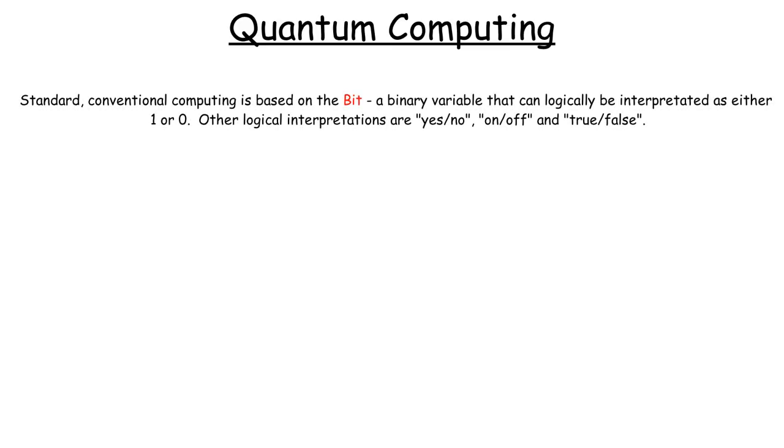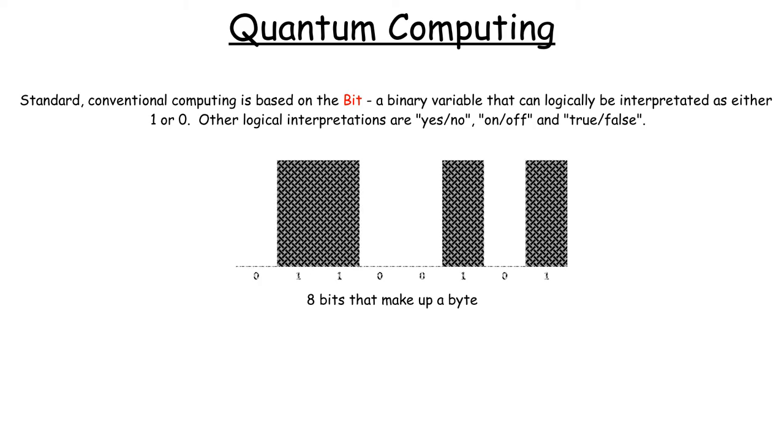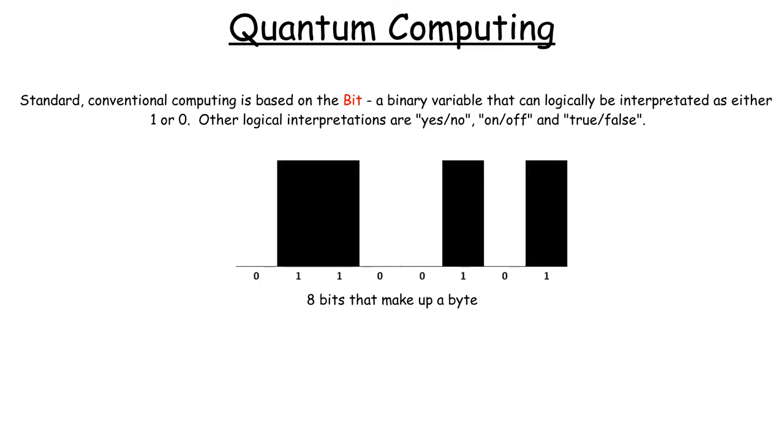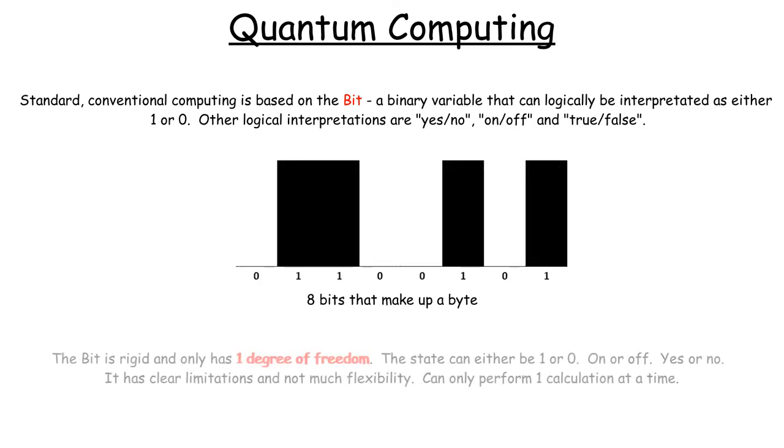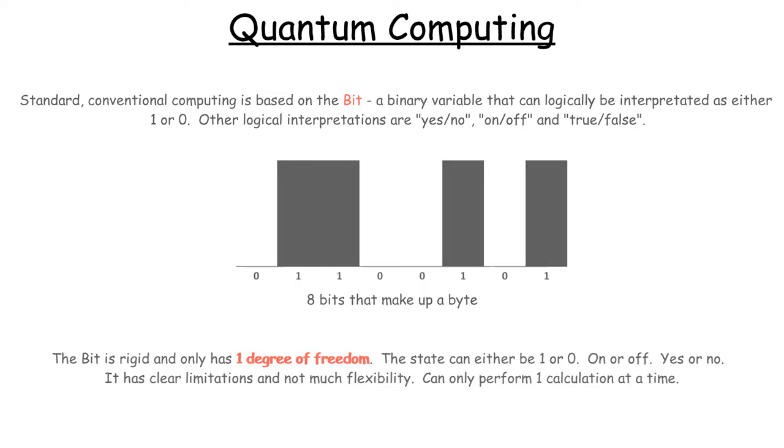So let's first of all talk about our conventional way of computing, which is based on the bits, a binary variable that can be interpreted as one or zero. Up, down, yes, no, on, off. Eight bits make up a byte, and the bit is quite rigid. It can only perform one calculation at a time.